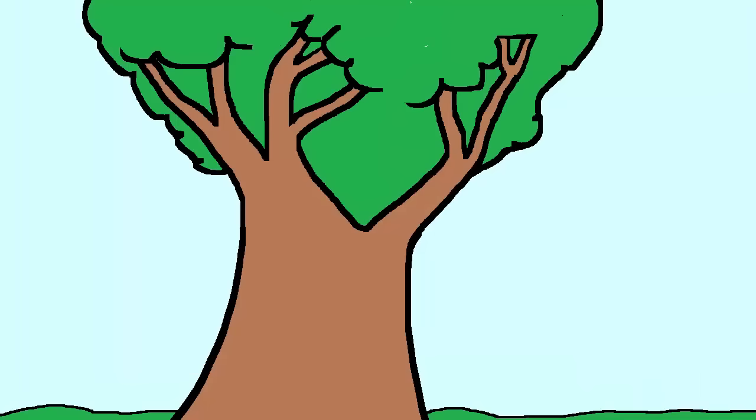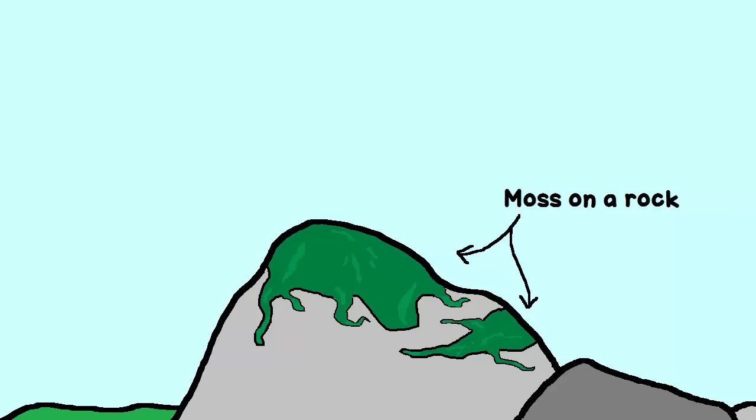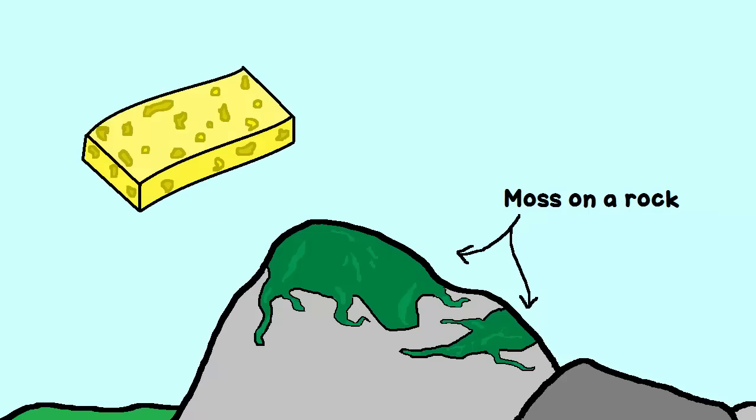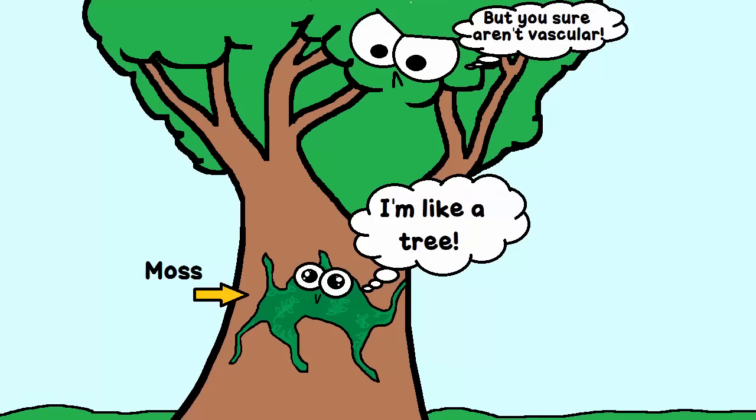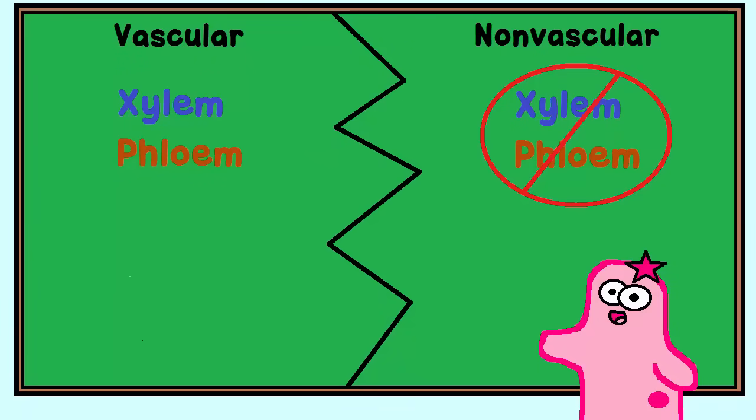A giant tree needs a xylem for water transport. That water is being carried against gravity. Non-vascular plants instead get their water by osmosis, kind of like soaking up water like a sponge. A great example of a non-vascular plant is moss. Remember, vascular plants have xylem and phloem, vascular tissue, and non-vascular plants don't.